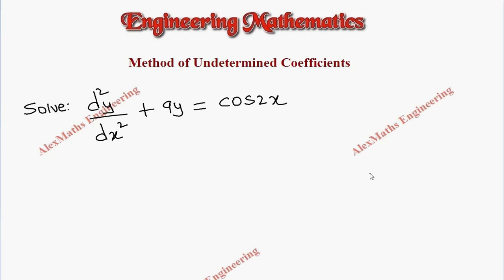Hi students, this is Alex. In this video we are going to solve a differential equation using the method of undetermined coefficients. Let's rewrite this: the first term is d²y/dx², the second term is plus 9y equals cos(2x). As part of solving, we have to write the auxiliary equation which is m² plus 9 equals 0.